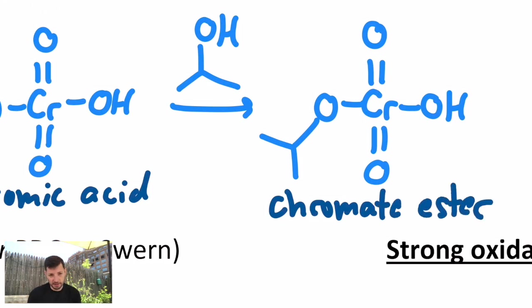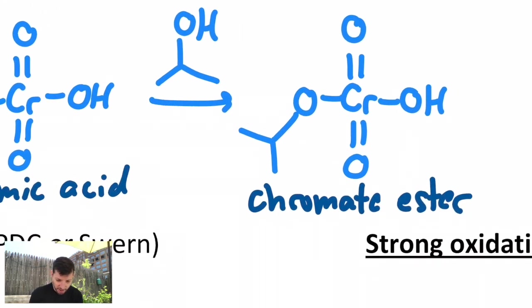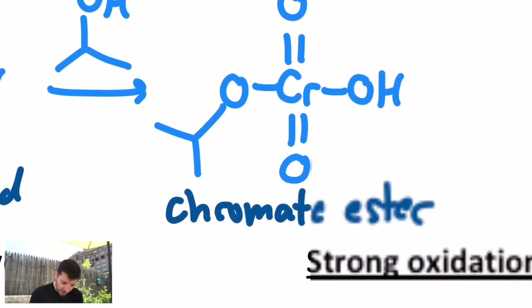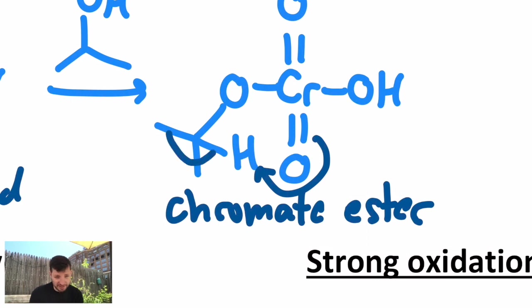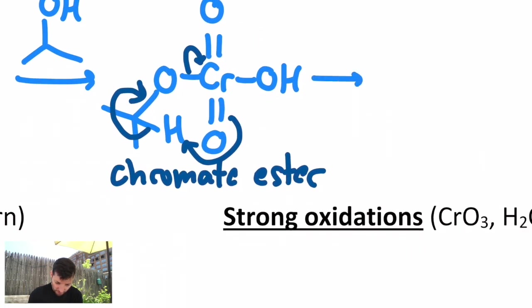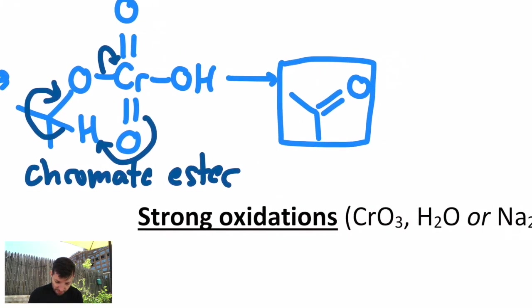And this is the species that undergoes the actual oxidation. What happens is you lose a hydrogen from what used to be the alcohol carbon. Chromium actually takes it, or the oxygen of the chromium oxygen takes it. The C-H bond breaks and becomes a C-O double bond. That breaks the chromium oxygen bond. And that's how you get your carbonyl. And you get a byproduct. You get a reduced chromium species.